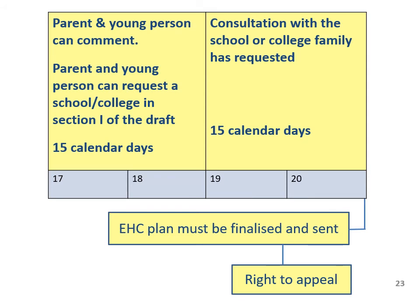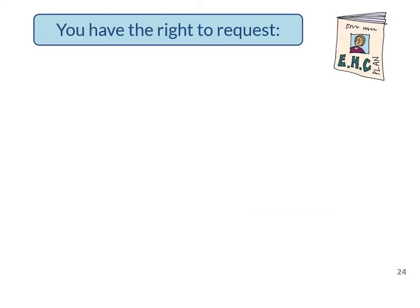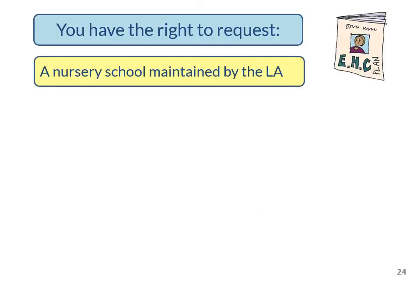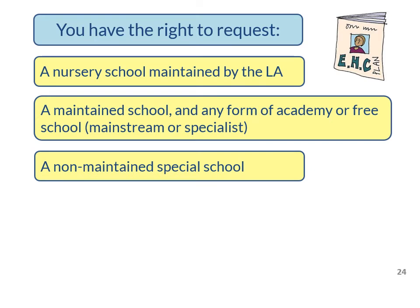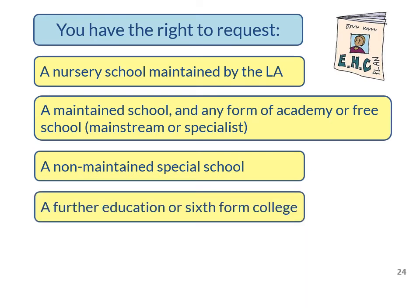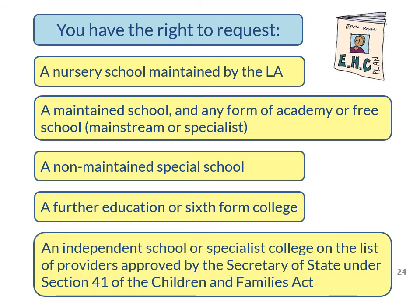Then in weeks 19 and 20, the local authority must consult with the educational setting that you or your child named in Section I of the draft, and the setting will consider all the information about your child. You have the right to request a nursery school maintained by the local authority, a maintained school, any form of academy or free school — mainstream or specialist — a non-maintained special school, a further education or sixth form college, or an independent school or specialist college on the list of providers approved by the Secretary of State under Section 41 of the Children and Families Act 2014.